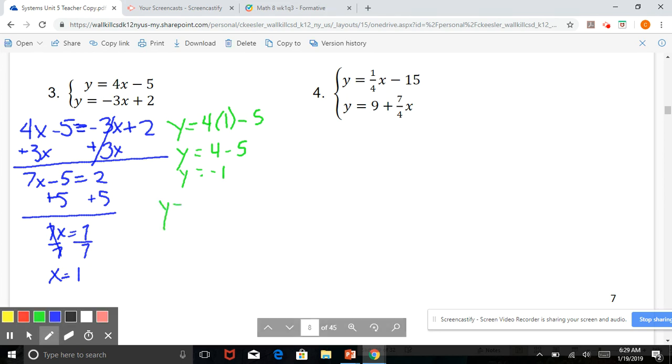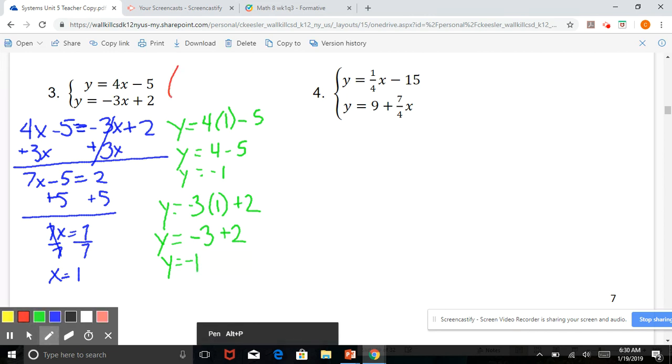Let's make sure we get the same thing for the second equation. y equals negative 3 times 1 plus 2. So y equals negative 3 plus 2, which again is negative 1. So the solution to this equation is 1, negative 1. If those two equations were graphed on a coordinate plane, they would intersect at that point, 1, negative 1.